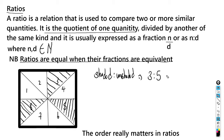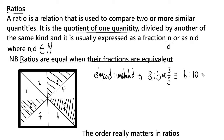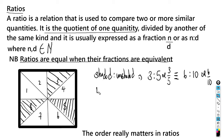Ratios are equal when their fractions are equivalent. To represent three to five as a fraction, that's three over five. If we multiply both the three and the five by two, we get six to ten, or six over ten. Six over ten equals three over five, so they are the same ratio.